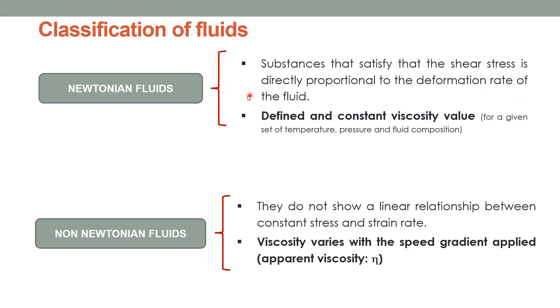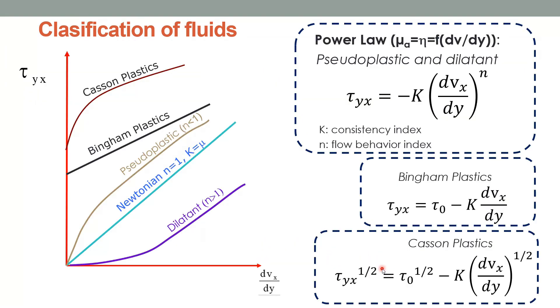Depending on whether or not they follow Newton's law of viscosity, fluids will be classified into Newtonian or non-Newtonian fluids. In the former, the viscosity will take a defined and constant value for each pressure and condition while in the latter, the viscosity will be a function of the speed gradient and we'll speak of apparent viscosity. In the following diagram, in which the shear stress is represented versus the shear rate, the different types of fluids are presented.